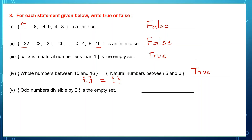Question 5: odd numbers divisible by 2. Now, are any odd numbers — 1, 3, 5, 7 — divisible by 2? No. So the set will be empty. The statement says odd numbers divisible by 2 is the empty set, which is true.